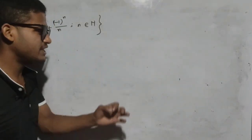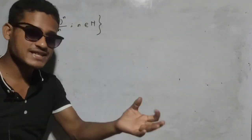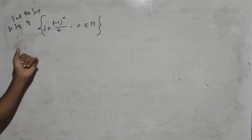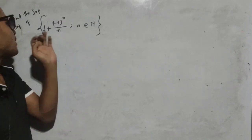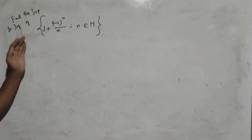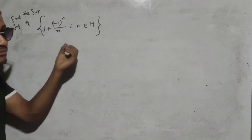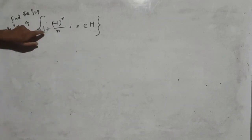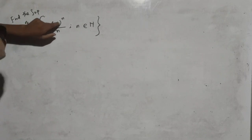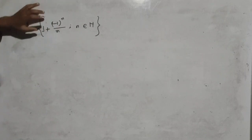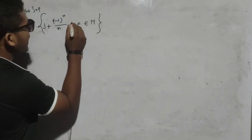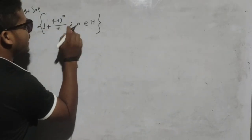In the previous video, we discussed what is supremum and infimum. But in this video, we are going to find the supremum and infimum of this set. This set is in the set builder form, defined as 1 plus (-1) to the power n divided by n, such that n belongs to the natural numbers.